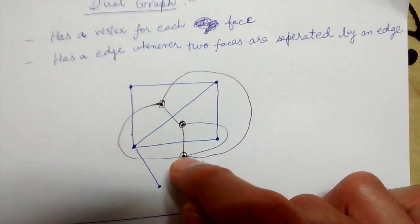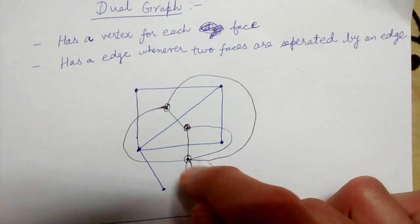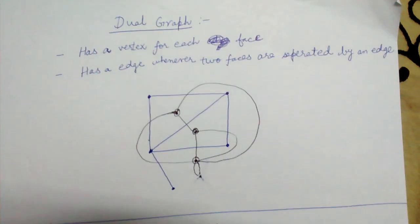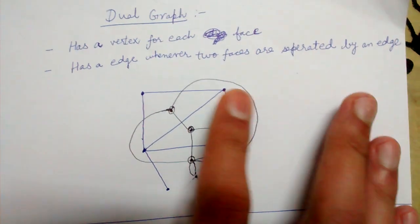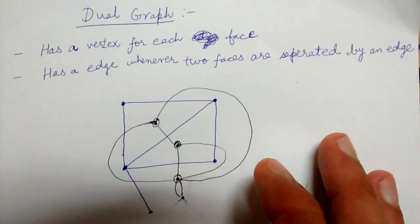So this is our vertex in the dual graph which represents the infinitely extending face and we draw a self loop on that. So this is how we obtain the black colored dual graph. This is how we obtain our dual graph.